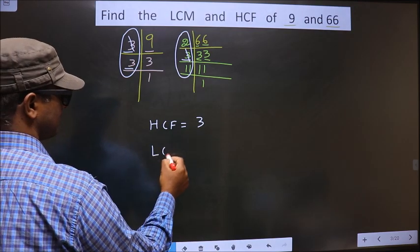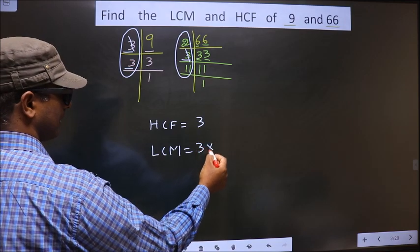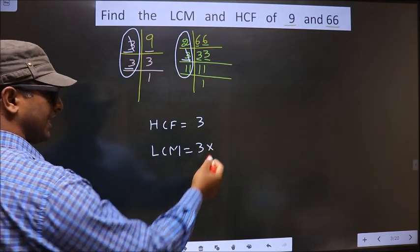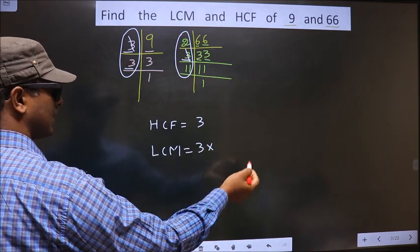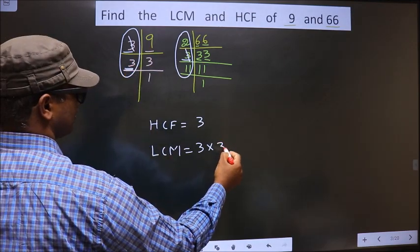Now, LCM. Whatever you got HCF that you write into, into the numbers that were not cut. So in this place 3 was left out, so into 3.